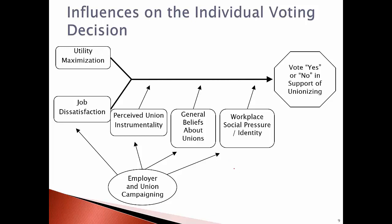Employer campaigning can include individual meetings or small group meetings with supervisors, who are allowed to explain why employees should not vote for the union. The company can send letters or emails to workers laying out their side of the argument, often focusing on strikes and paying union dues. Companies are also allowed to hold captive audience meetings — meetings at the workplace during working hours in which employees are required to listen to management's anti-union, pro-company presentations.